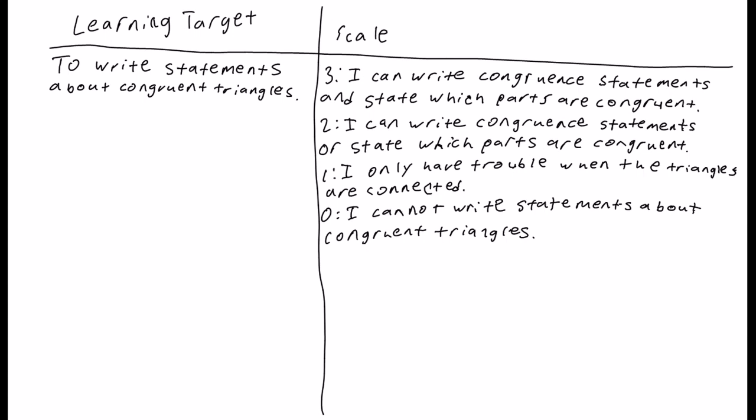which are part of what are called congruent statements, and we'll get into that in a moment. The scale: you're a three if you can write congruent statements and state which parts are congruent. Two, you can write congruent statements or state which parts are congruent.